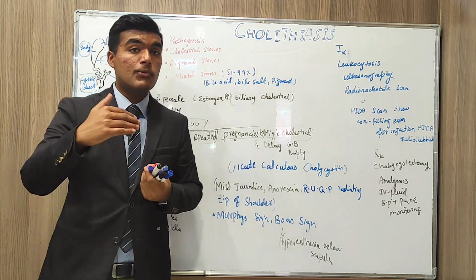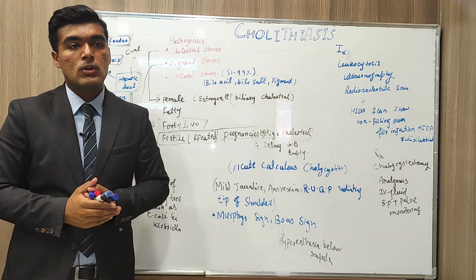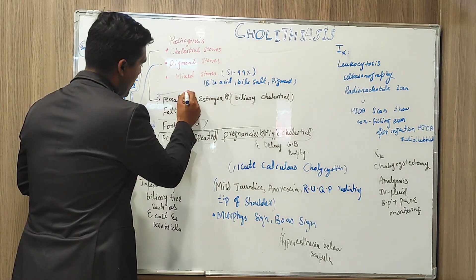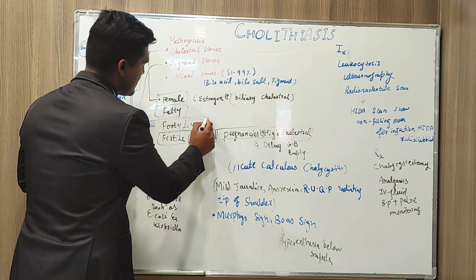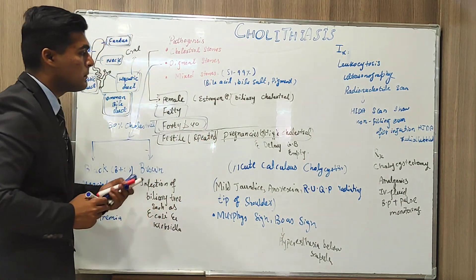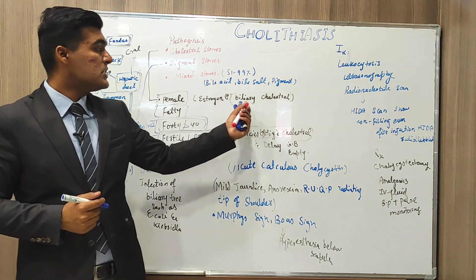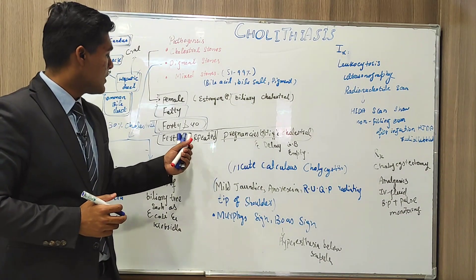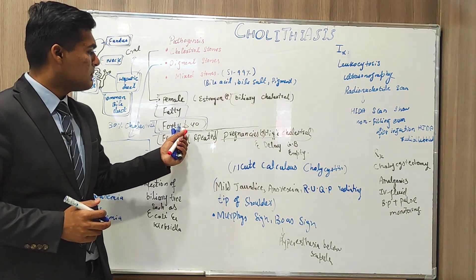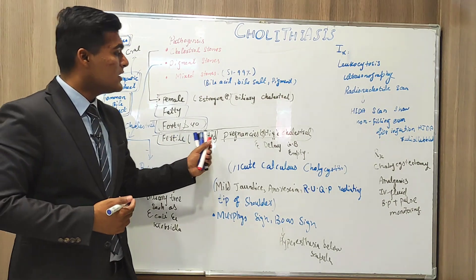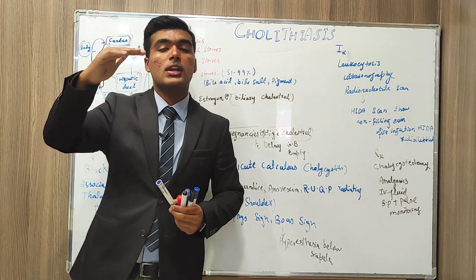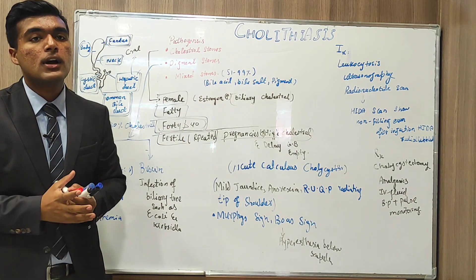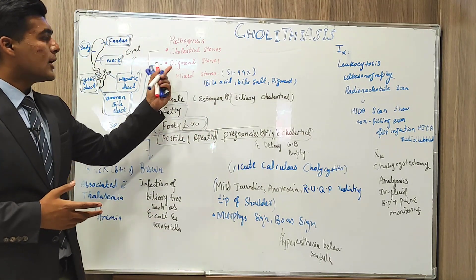When we talk about cholesterol stones, there are four major F's in their etiology: Female, Fatty, Forty, and Fertile. It is more common in females because estrogen increases biliary cholesterol, which impacts the development of cholesterol stones. If age is greater than 40, chances increase. In repeated pregnancies, cholesterol levels rise and gallbladder emptying is delayed, increasing the chances of developing Cholelithiasis.